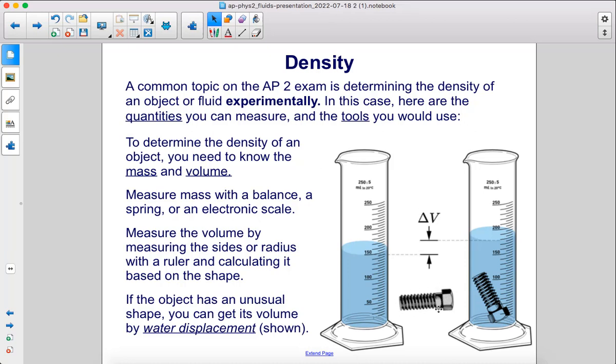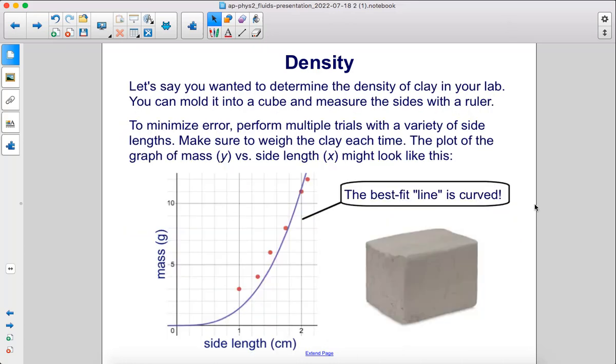For example, you can put this screw into this water and see how high the water level rises. Let's say you wanted to determine the density of clay in your lab. You can mold it into a cube and measure the sides with a ruler. To minimize error, perform multiple trials with a variety of side lengths. Make sure to weigh the clay each time. The plot of the graph of mass versus side length might look like this. The best fit line here is curved.